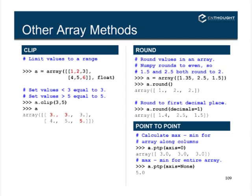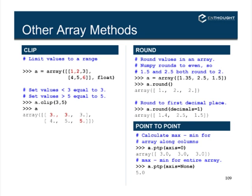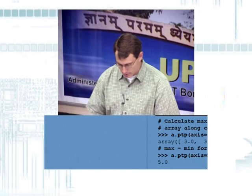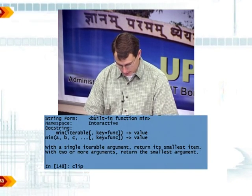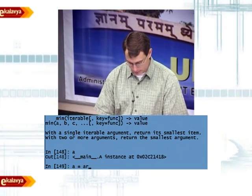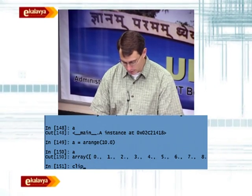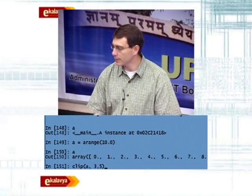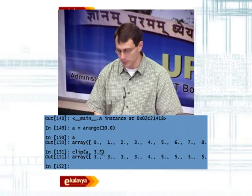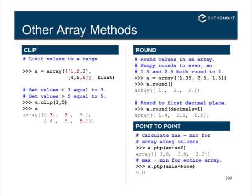Another useful method is clip, which you'll find yourself using quite a bit. Clip allows you to specify a low and high threshold for your array. For example, with values 1 through 6, you can clip all values below 3 to 3 and all values above 5 to 5. So a.clip(3, 5) returns the clipped array — any value below 3 is set to 3, any value above 5 is set to 5.